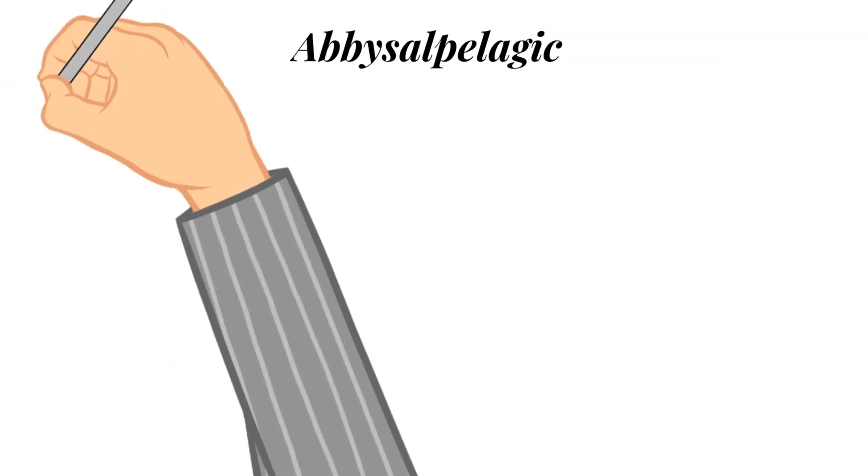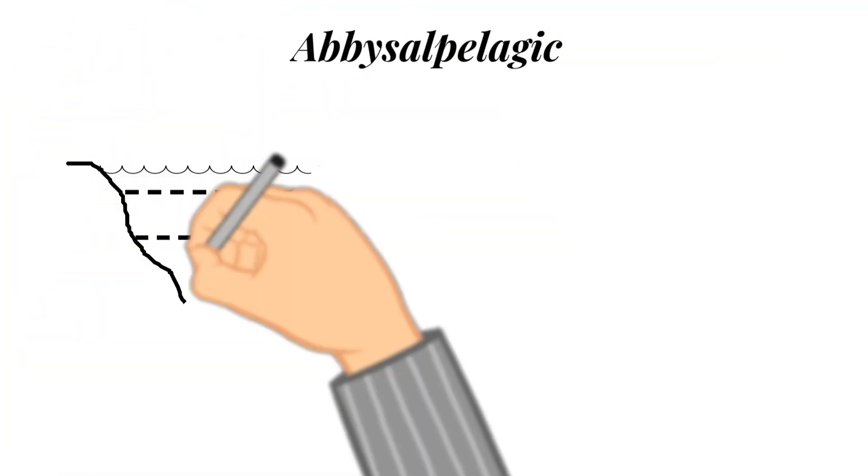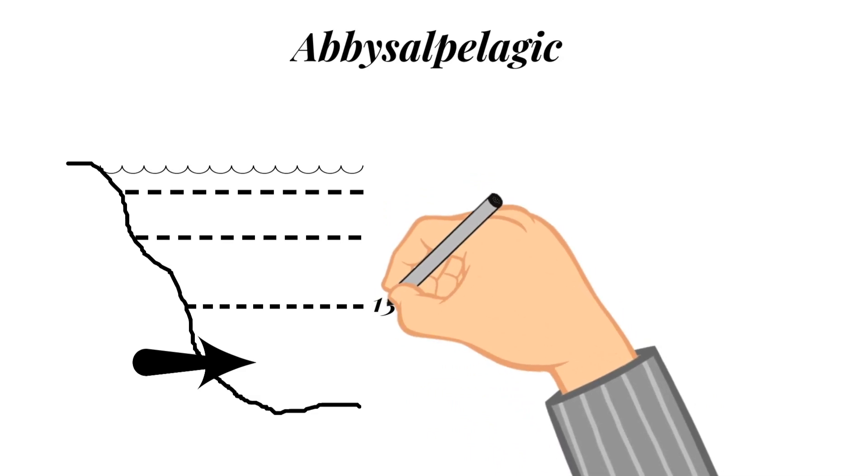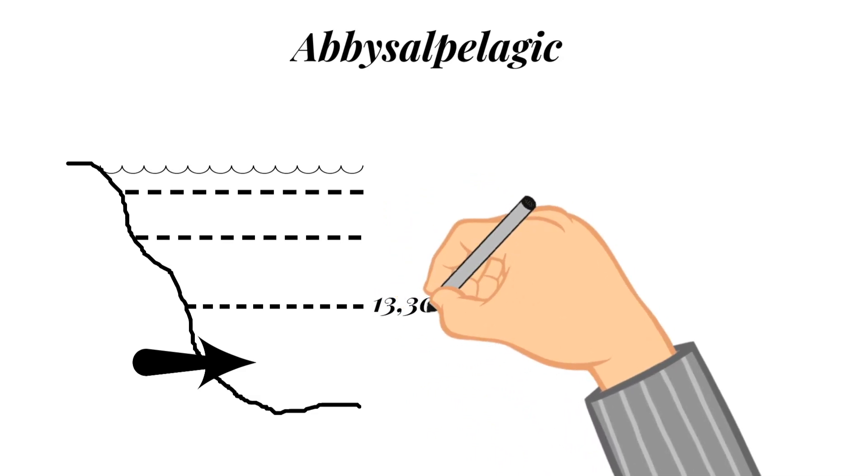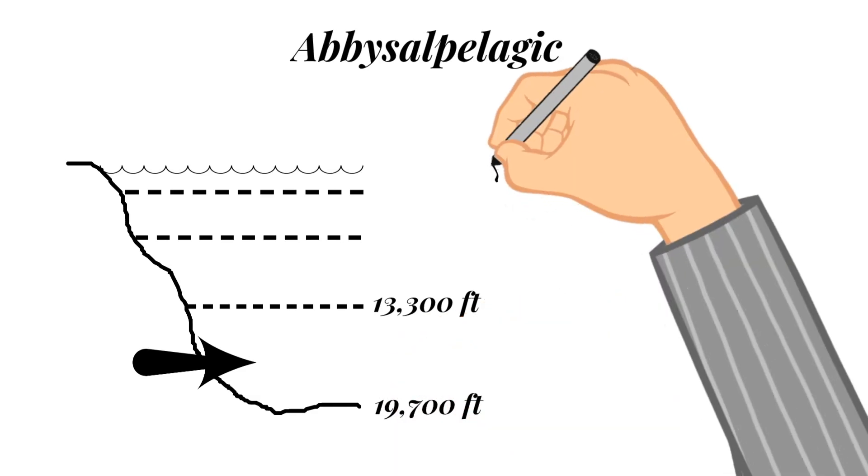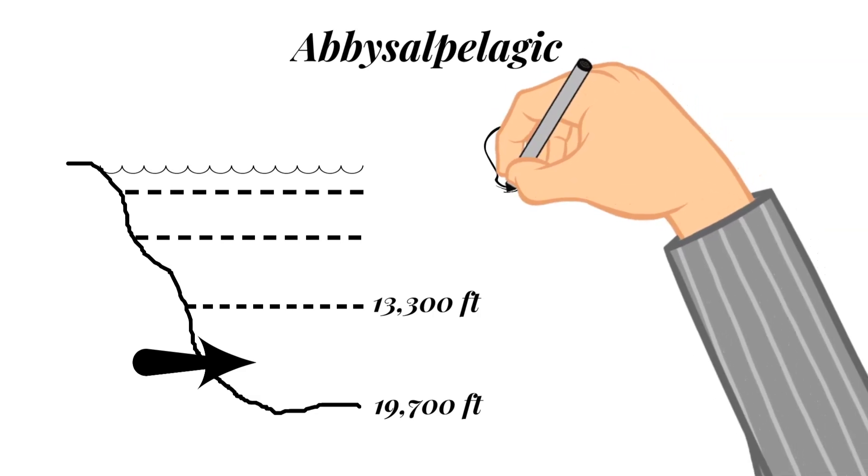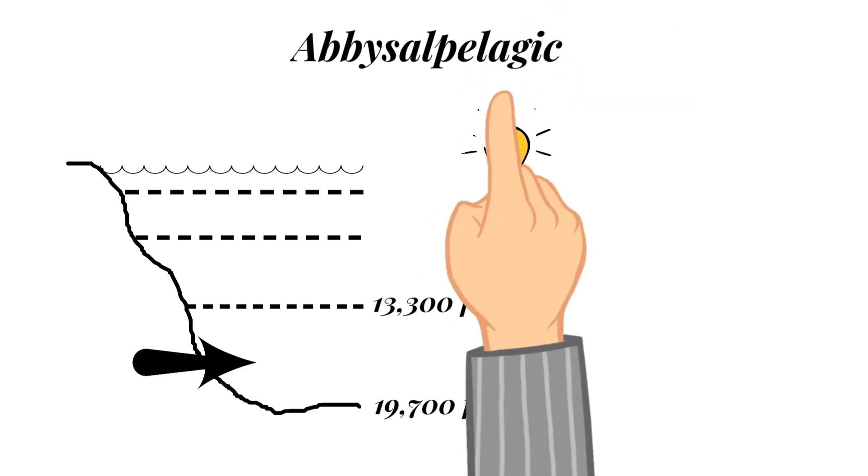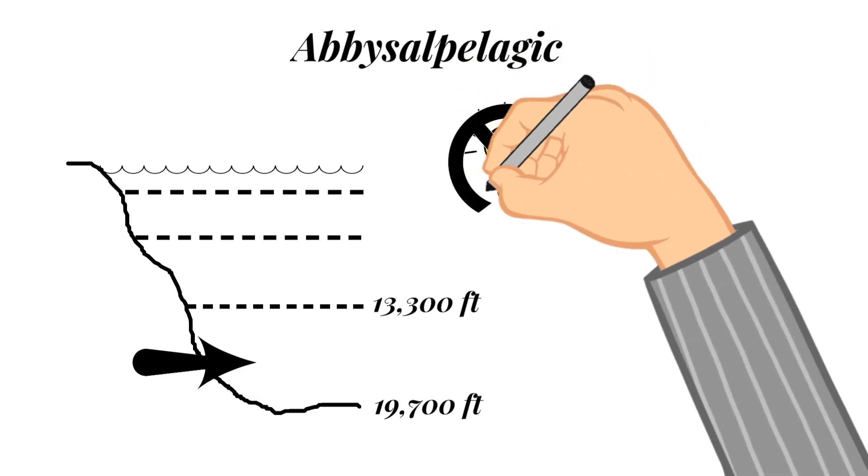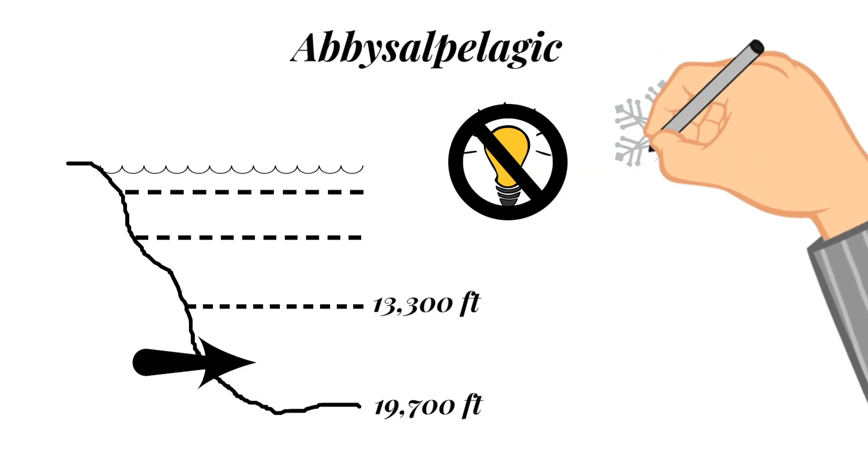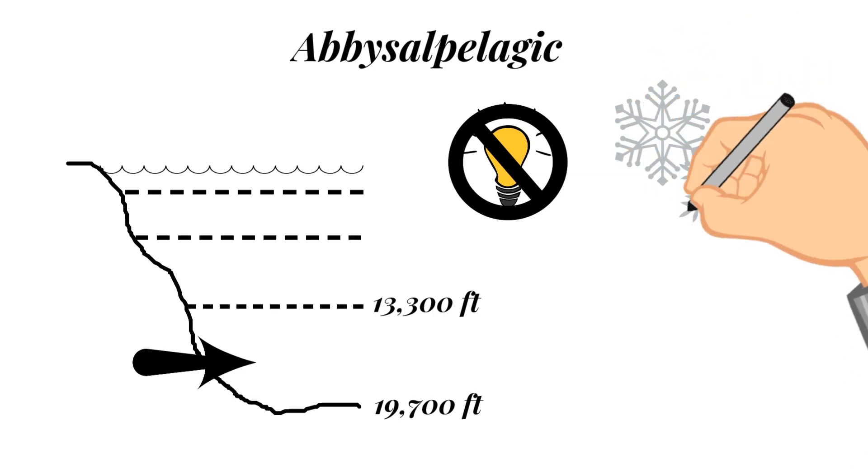And this is the abyssal pelagic zone. This zone extends from 13,100 feet to 19,700 feet. And this zone is pitch black. It is the bottom layer of the ocean and the water temperature at this depth is pretty close to freezing. Only a few creatures can be found at these depths because the pressure is so great.